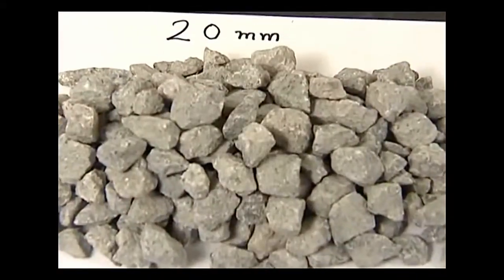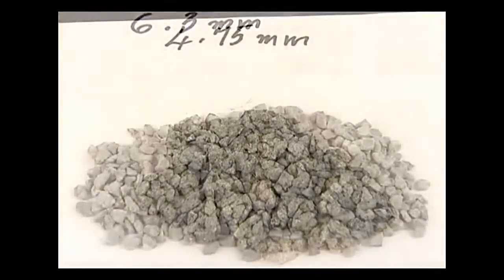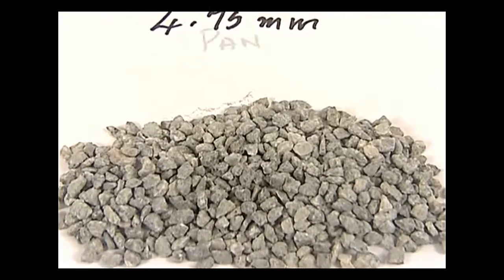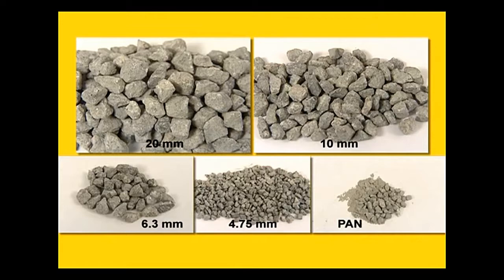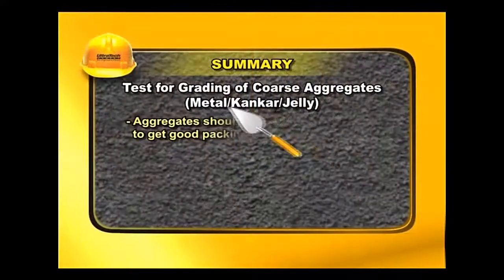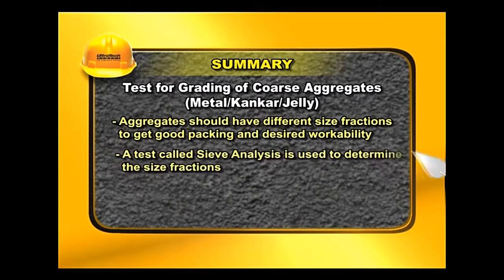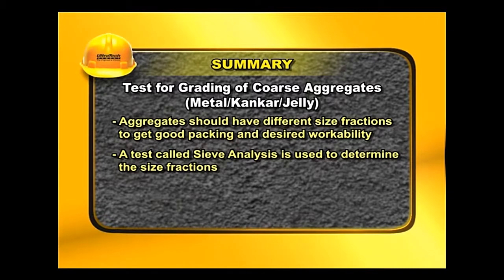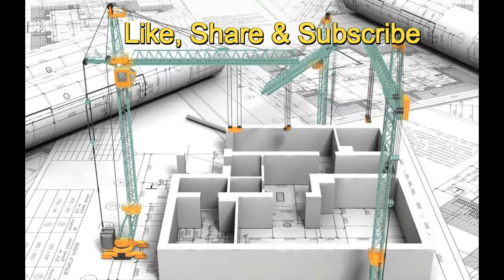The percentage passing is calculated from the cumulative percentage retained. In case of aggregate not having the required percentage passing for any particular sieve size, different sizes of aggregates can be mixed to make it a well graded aggregate. Aggregates should have different size fractions to get good packing and desired workability. Use of well graded aggregates produces good quality concrete.